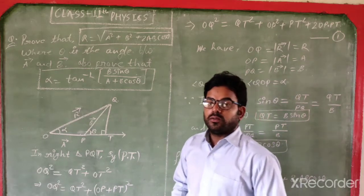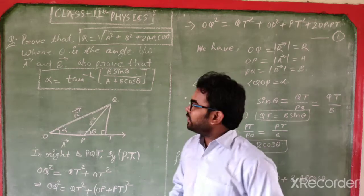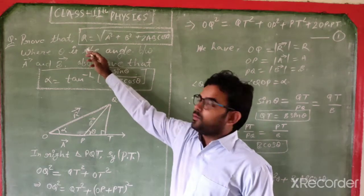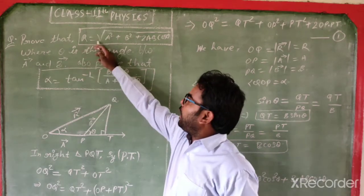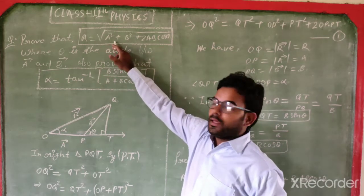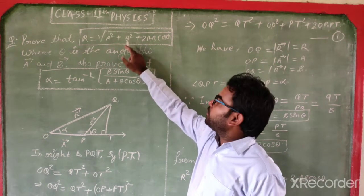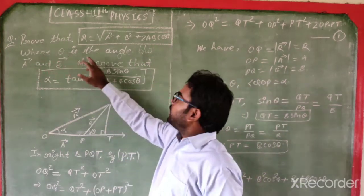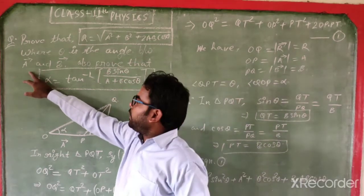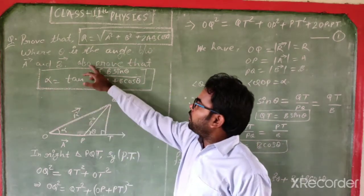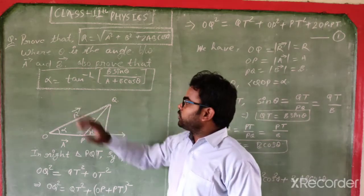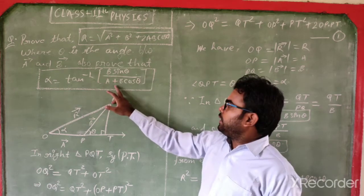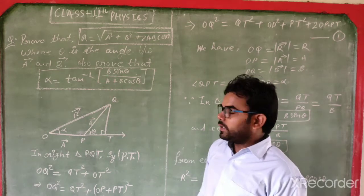In this video, I will explain an important question of class 11 physics. We need to prove that the resultant vector R is equal to root of A square plus B square plus 2AB cos theta, where theta is the angle between vector A and vector B. Also prove that alpha is equal to tan inverse of B sin theta by A plus B cos theta.